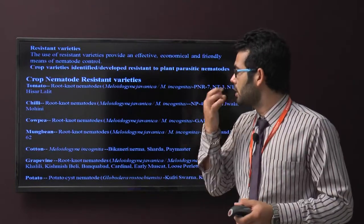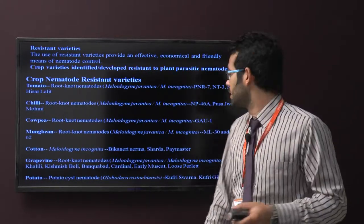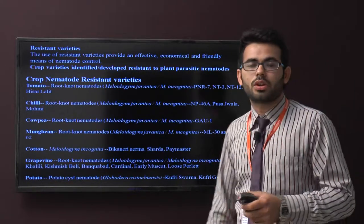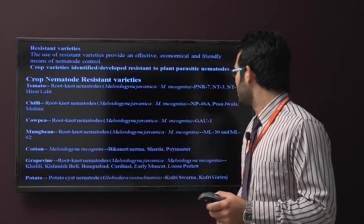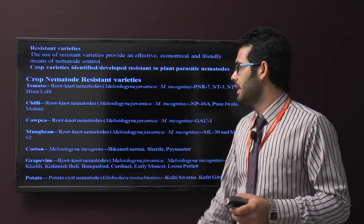In cowpea, against the root-knot nematode, the resistant variety is GAU (Gujarat Agricultural University). In mung bean, against the root-knot nematode, the resistant varieties are ML30 and ML62.